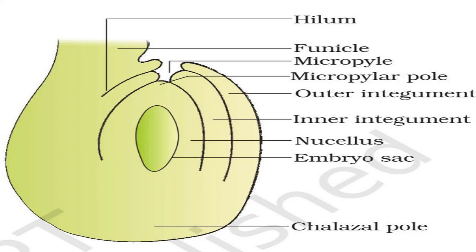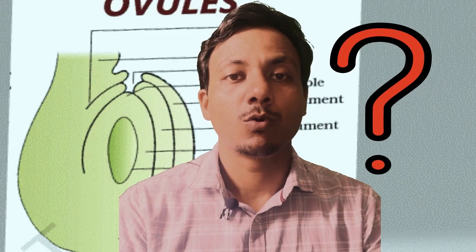Each ovule has one or two integuments, which are protective coverings. There is a small opening at the tip called the micropyle, through which the pollen tube enters. The base opposite to the micropyle is called the chalaza. Inside the integuments is the nucellus, a tissue rich in stored food. Within the nucellus lies the most important structure — the embryo sac, or female gametophyte.